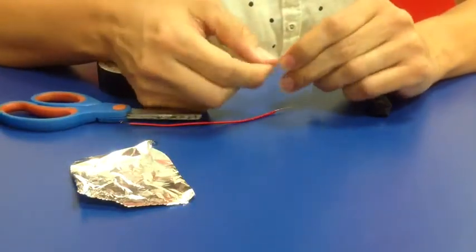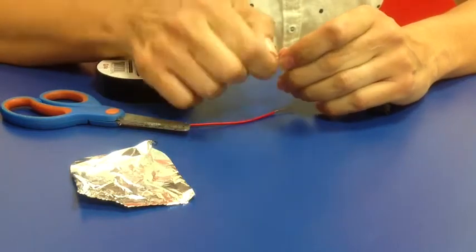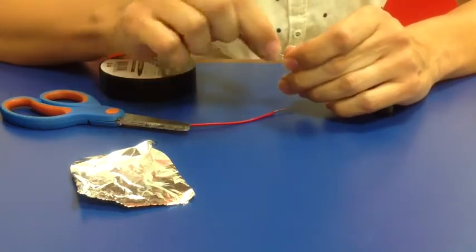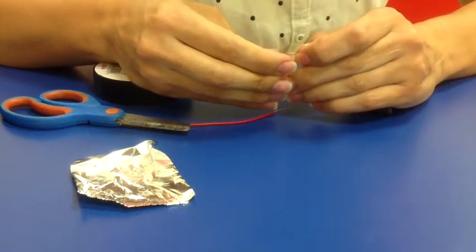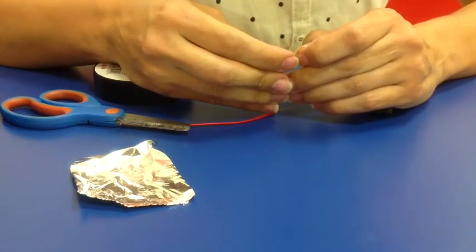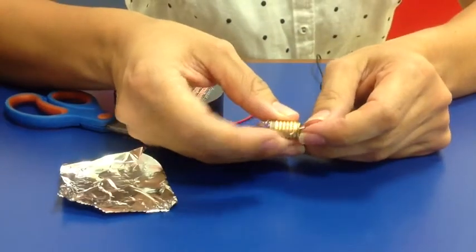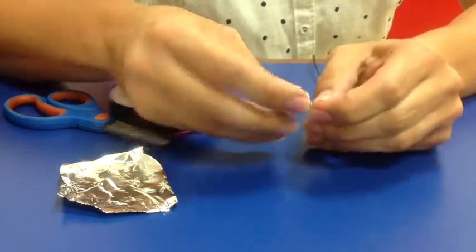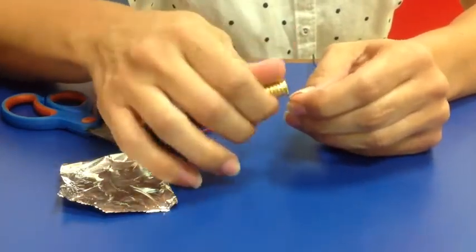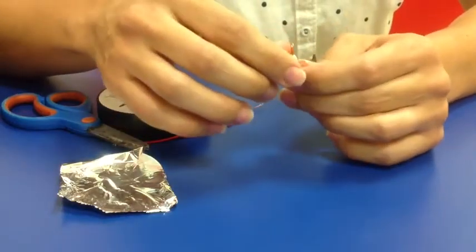So, you put it in the loop here. You can put it halfway through, then you fold it in half like that. And then you start twisting it to make sure it's nice and tight. It shouldn't be loose so that there's no false contact.